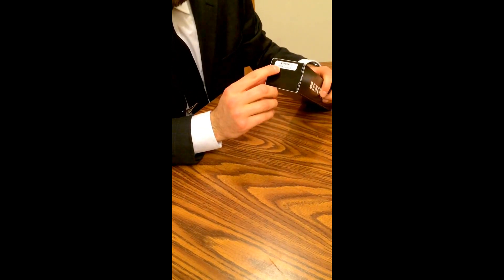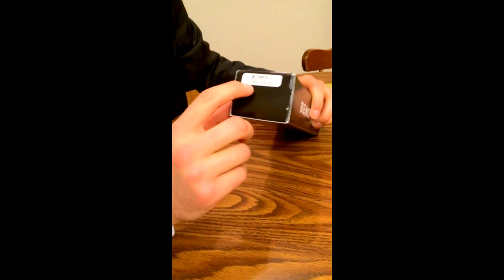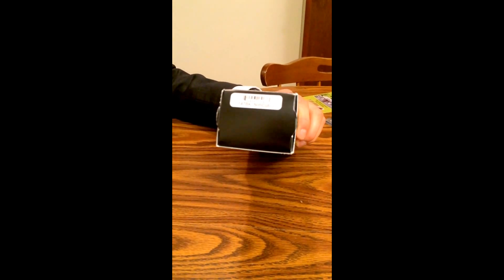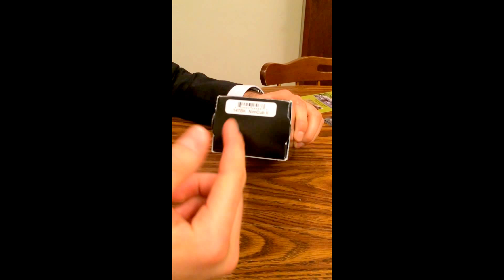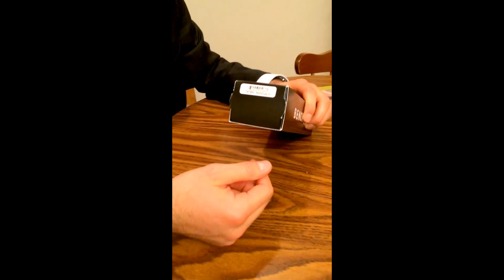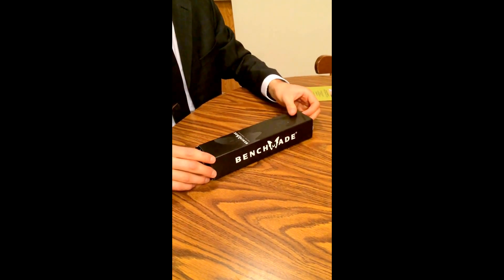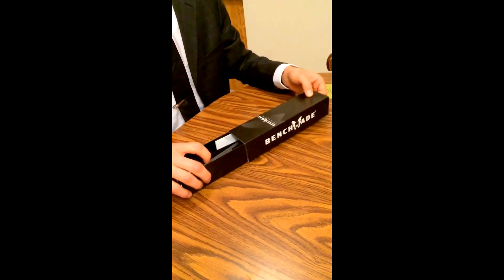This is the 147BK Nimcub 2. What that means is it's the drop point plain edge blade. They also make the drop point in a serrated edge, so it's a combo edge to be proper, and also the same thing in tanto. They have plain tanto and combo tanto.